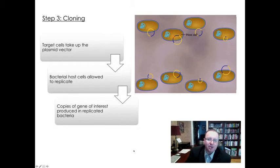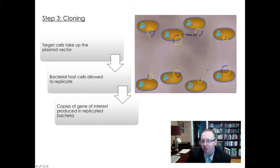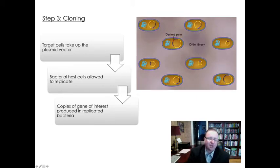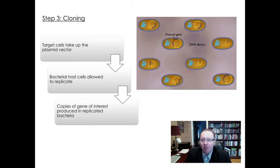The third step in the genetic engineering process involves cloning. Bacterial cells will take up that plasmid vector — there's a process done to allow them to take it up: we expose them to a certain chemical that makes them what we call competent, meaning they are competent for uptaking the vector. You can see in this picture the process of those plasmids going back into the bacterial host cells. The host cell is then allowed to replicate, producing lots and lots of copies of itself. The bacterial cells that have the desired gene, as they replicate, make lots and lots of copies of that desired gene — producing a tremendous number of DNA sequences of our desired gene.